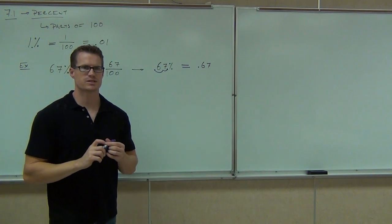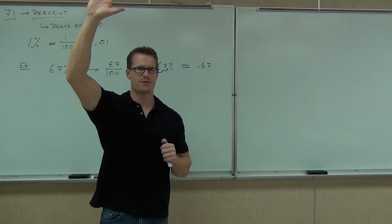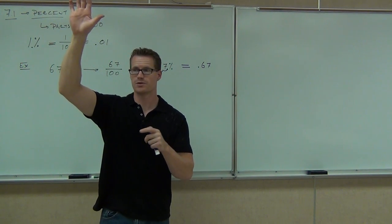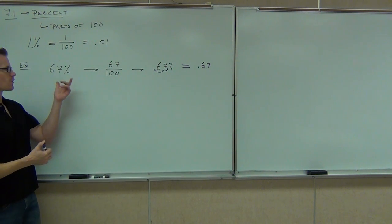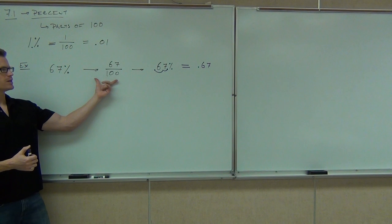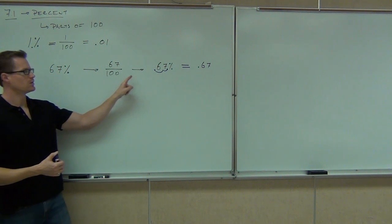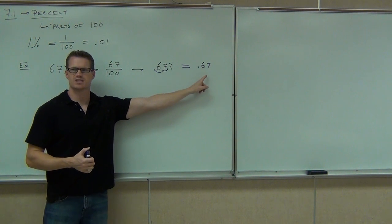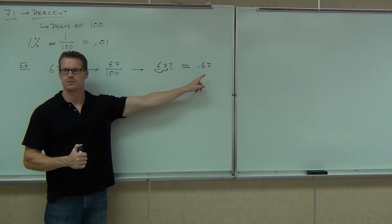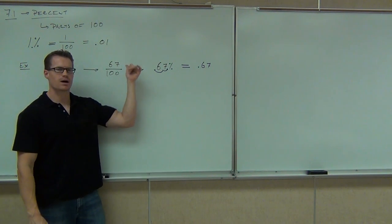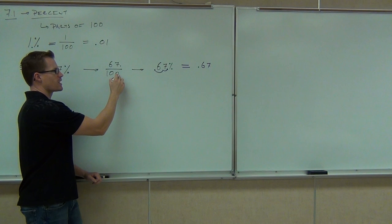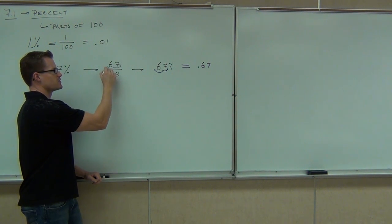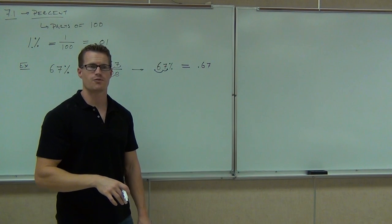So 67% equals 0.67. Are we getting from the percent to the fraction okay? Why can we get from the fraction to the decimal? The decimal is coming from the percent — we move it to the left. Why can we move it to the left? It's divided by 100. So if you had 67 divided by 100, that's like 67.0 divided by 100 — you move it two spots to the left and you get 0.67. Just like we practiced on our fractions earlier.